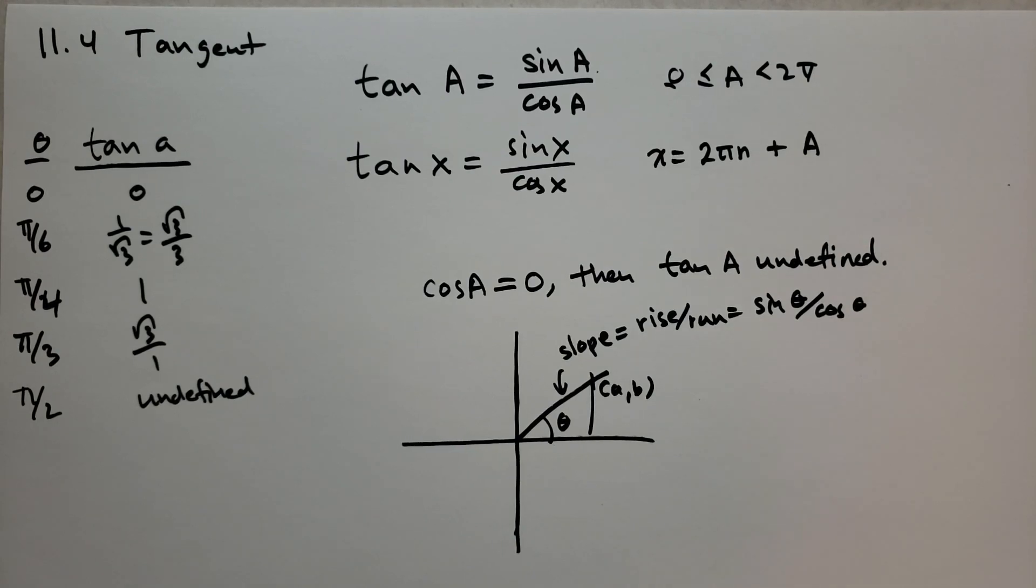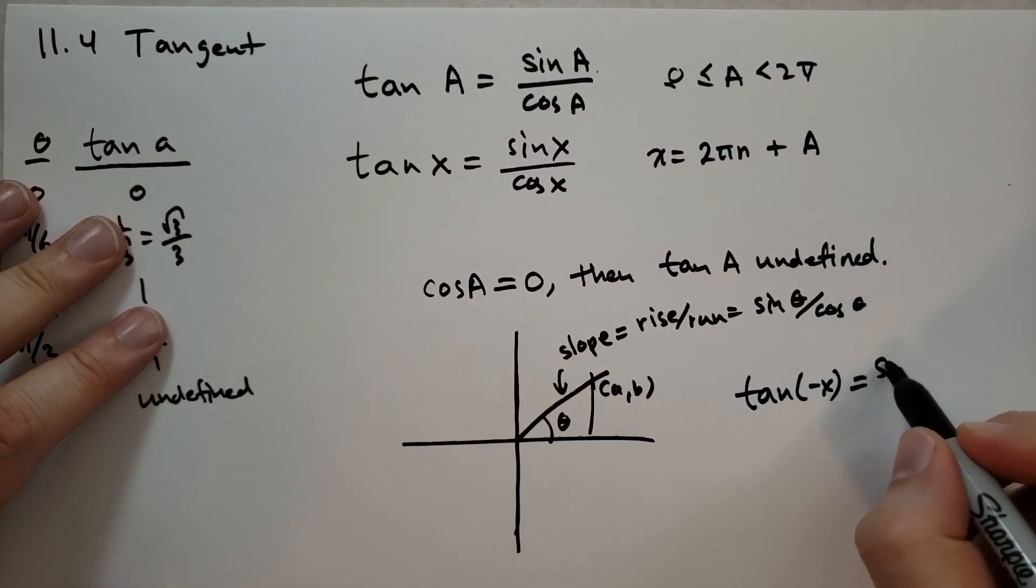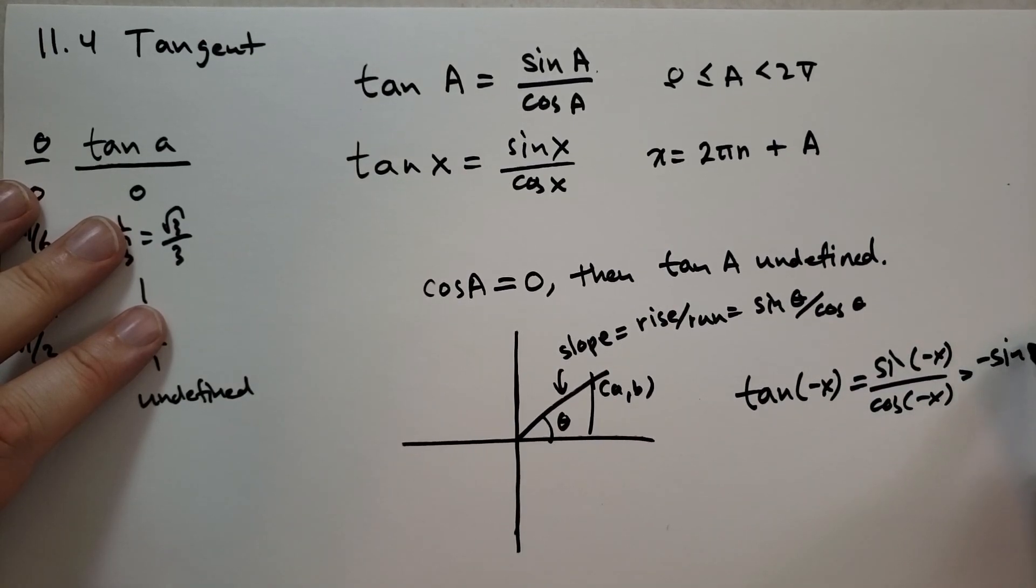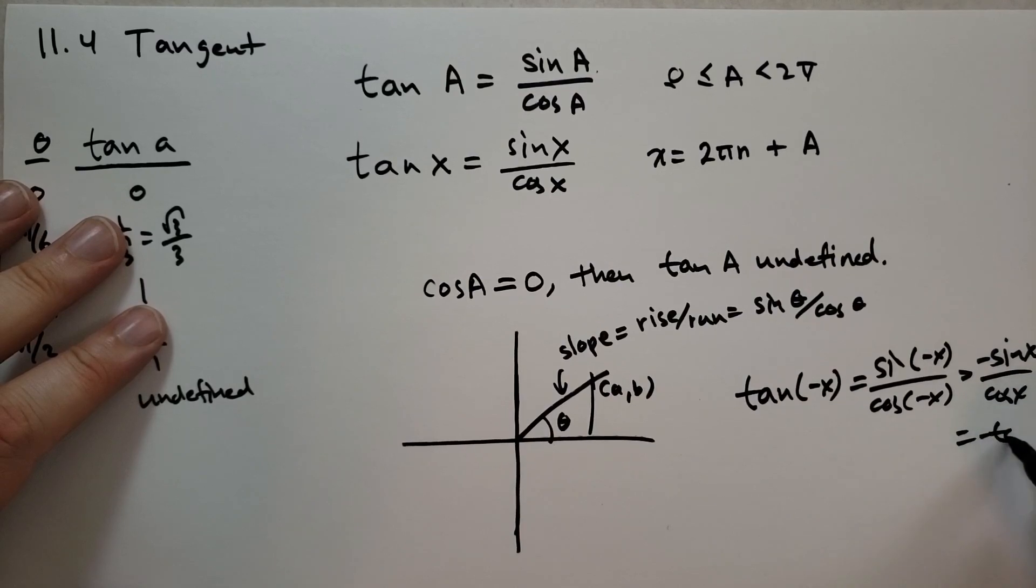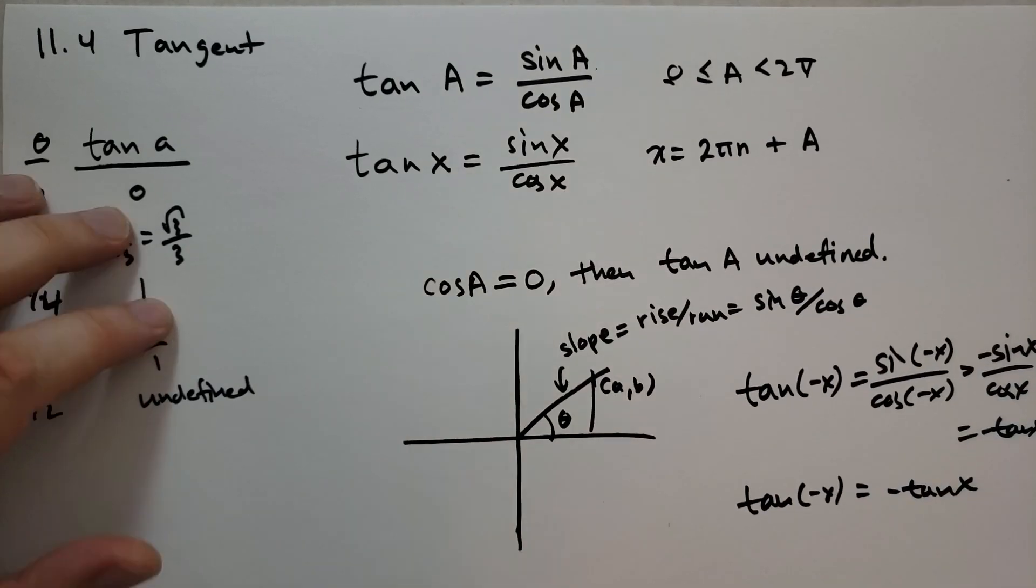Some identities that are pretty easy to tell. What if we have tangent of minus x? Well, that's the same as sine of minus x all over cosine of minus x, which is minus sine of x all over cosine of x, which is just minus tangent of x. So tangent of minus x is equal to minus tangent of x. That's pretty simple.